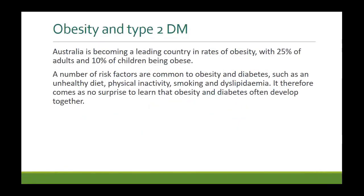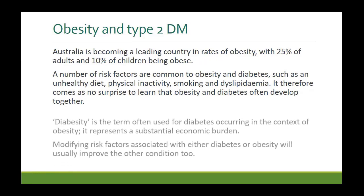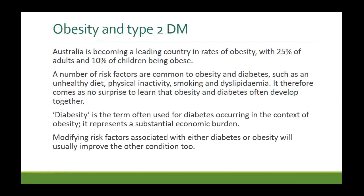Australia is becoming a leading country in rates of obesity, with 25 percent of adults and 10 percent of children being obese. A number of risk factors are common to both obesity and diabetes, such as an unhealthy diet, physical inactivity, smoking, and dyslipidemia. It therefore comes as no surprise that obesity and diabetes often develop together. Modifying risk factors associated with either condition will usually improve the other condition too.